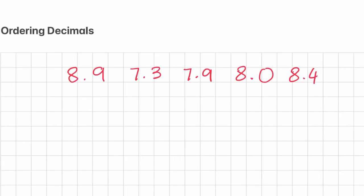In this video I'm going to show you how to order decimals in two simple steps. The first step is we need to list the numbers, and then we're going to compare the numbers starting from the left.